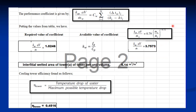The available value is calculated using the correlation given in the book or obtained experimentally during testing of the cooling tower after manufacturing. From this correlation, we get the available (experimental) value. Comparing: the experimental value is less than the demand value, which means the cooling tower is not performing at the expected capacity and needs improvement.